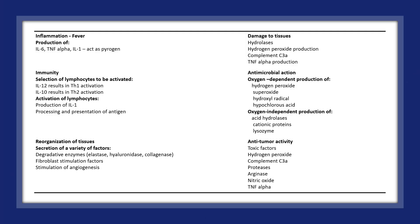The different functions of macrophages involve: inflammation — production of cytokines such as TNF-alpha and IL-1; immunity — selection and activation of lymphocytes, and deactivation of lymphocytes; reorganisation of tissues — secretion of a variety of factors; damage to tissues — involving hydrolases, hydrogen peroxide production, complement C3a and TNF-alpha production; antimicrobial action — oxygen-dependent production of hydrogen peroxide and superoxide, and oxygen-independent production of acid hydrolases; and antitumour activity — toxic factors including hydrogen peroxide, complement C3, and proteases.